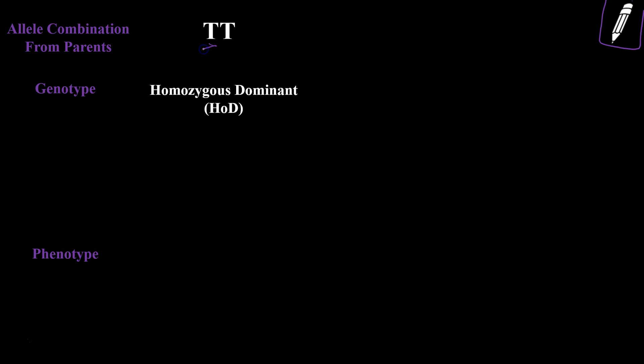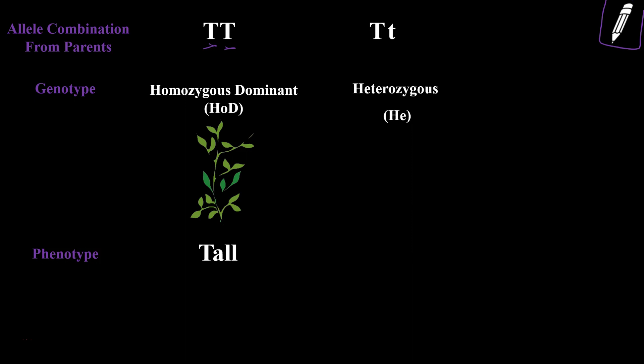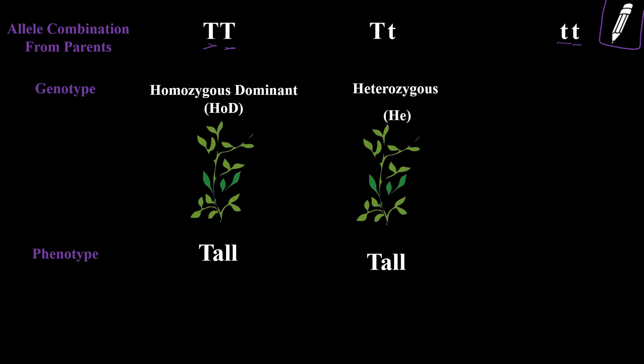Here's the last note: an allele is each individual version of a gene. The genotype of two dominant alleles is homozygous dominant and the phenotype is a tall plant. A dominant and a recessive allele together — that genotype is heterozygous, and the phenotype is still a tall plant. If there are two recessive alleles, that genotype is homozygous recessive and what you would see — what's shown or expressed — would be a short plant. That was it for this one, hope that was helpful!